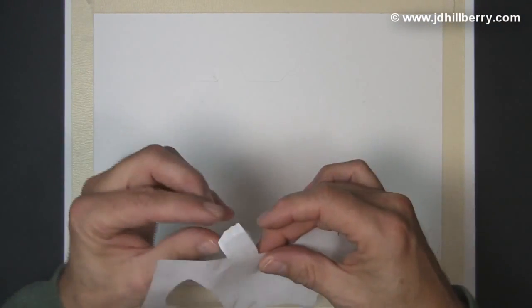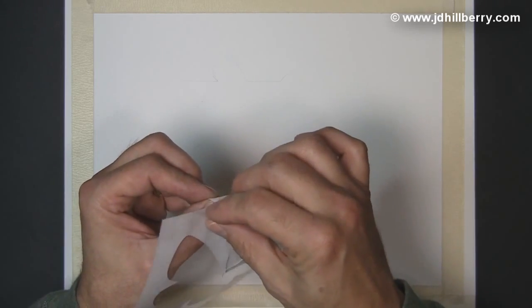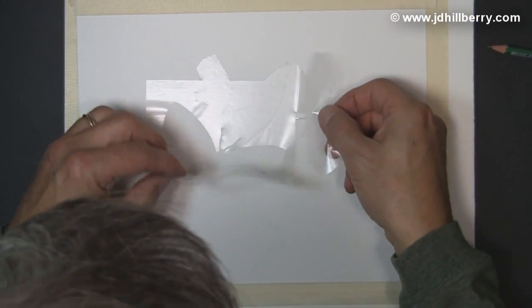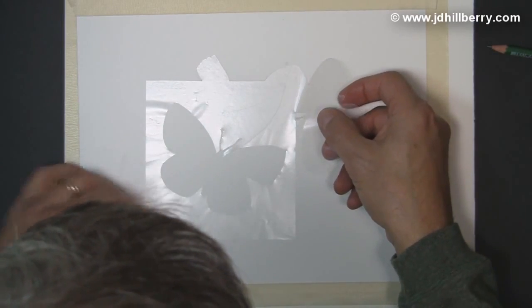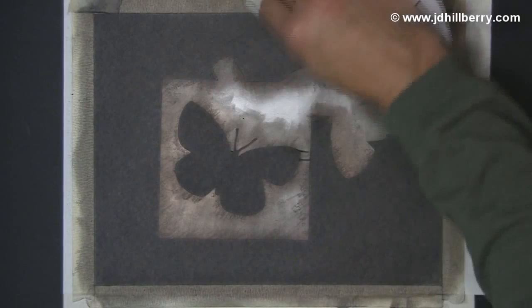Now I'm peeling the backing off of this frisket to reveal the sticky side. And that, of course, is what's going to be face down on the paper here. You have to handle this with care to make sure it doesn't stick in places you don't want to.